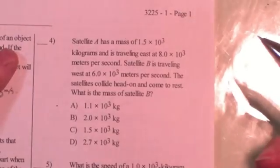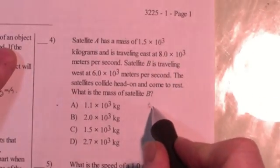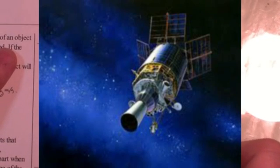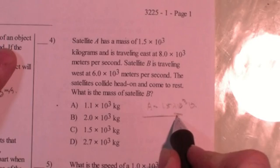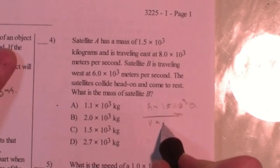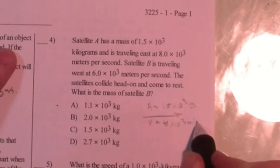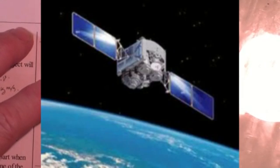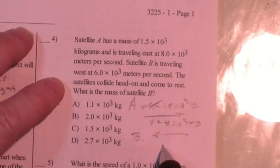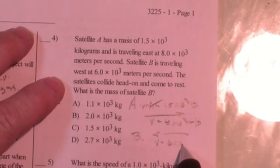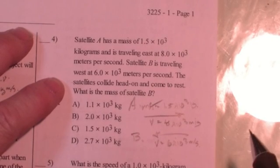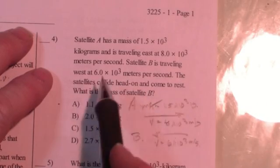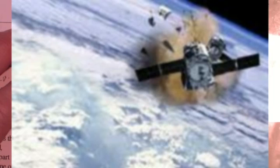Question four on this problem set. Satellite A has a mass of 1.5 times 10 to the 3 kilograms. It's traveling east at a velocity of 8 times 10 to the 3 meters per second. So this is my mass for A. Satellite B is traveling west at a velocity of 6 times 10 to the 3 meters per second. The satellites collide head-on and come to rest. Well, this is just a stupid question. Satellites, we imply that these are in space. If they collided head-on, they certainly wouldn't come to rest. They'd fall to Earth. But they tried to make it fancy. They couldn't keep colliding cars.